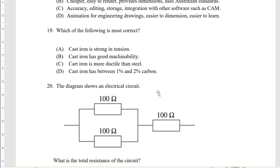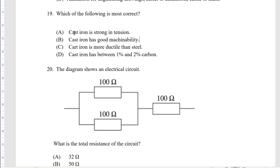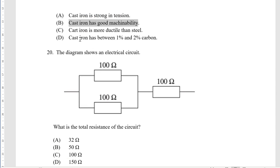Which of the following is most correct? Cast iron is more ductile than steel - that is incorrect. Machine ability - that's correct, B is the right answer. Cast iron is between one and two percent carbon. Cast iron is less ductile than steel.